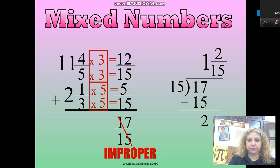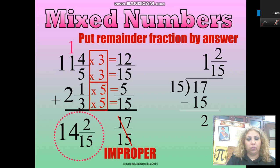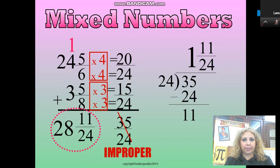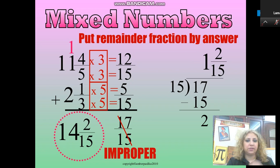Keep the denominator the same, which is 15. We are going to add the 1 to the 11 before adding it with the 2. 1 plus 11 is 12, then add the 2 to get 14. So the answer is going to be 14 and 2 over 15. This is the simplest form since 2 and 15 are not divisible by any common factor.